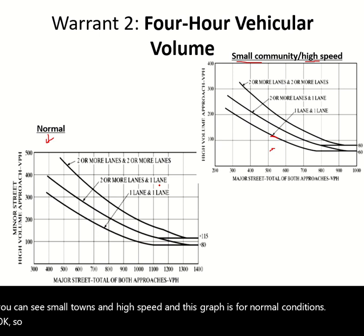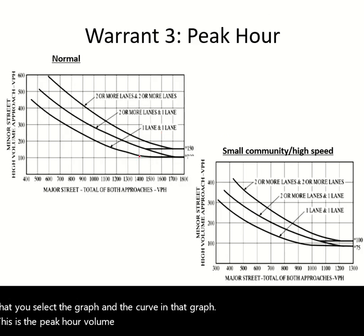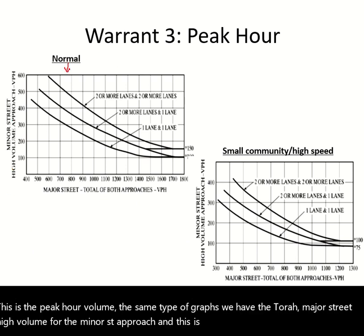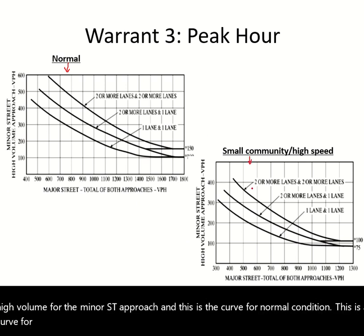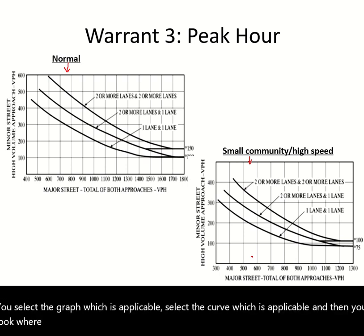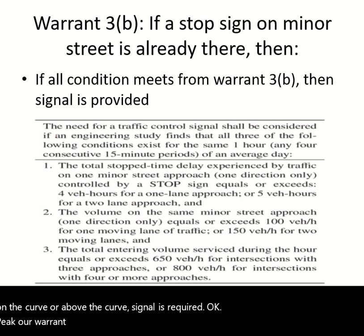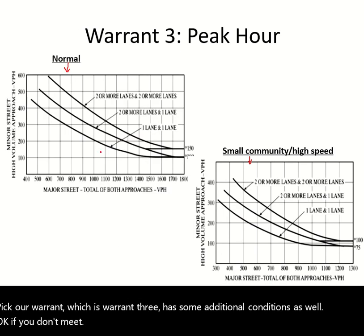Warrant 3 is the peak-hour warrant, using the same type of graphs with major street total on the x-axis and high-volume minor street approach on the y-axis. Select the applicable graph and curve, then check where your point is plotted. If on or above the curve, a signal is required. Warrant 3 also has additional conditions.